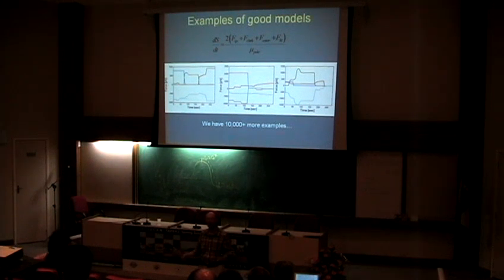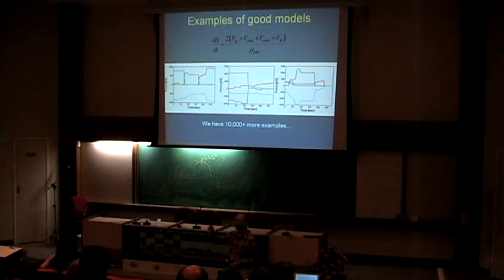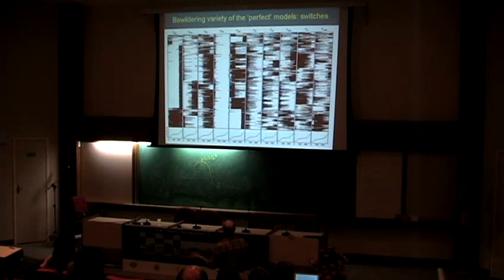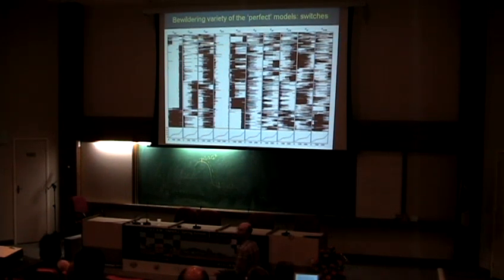What do you do next? So you have to cluster models somehow. So many of those models are different from each other just by one coefficient, which is 10% different. But you can't do it anymore with your hands. So that's what we ended up with, the bewildering variety of perfect models.